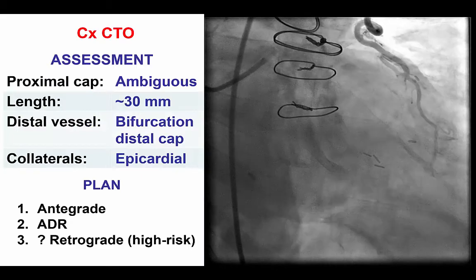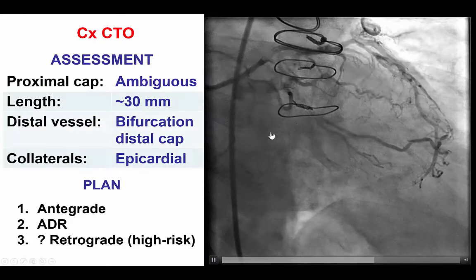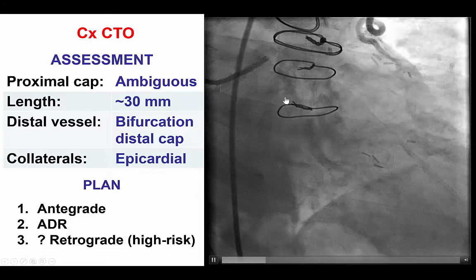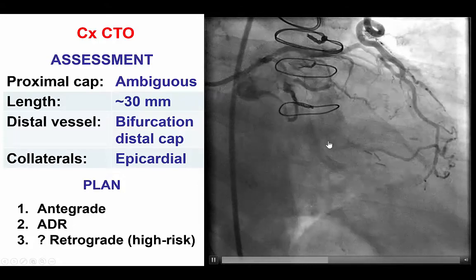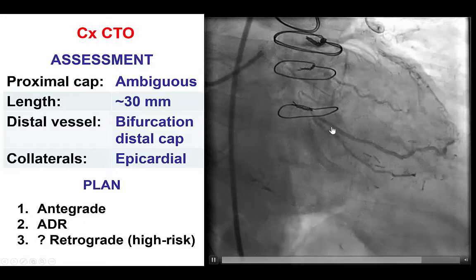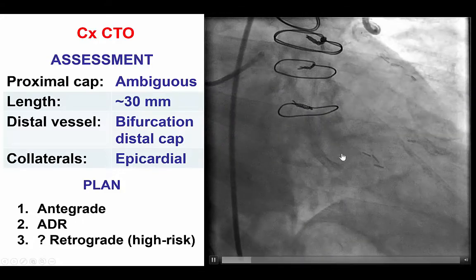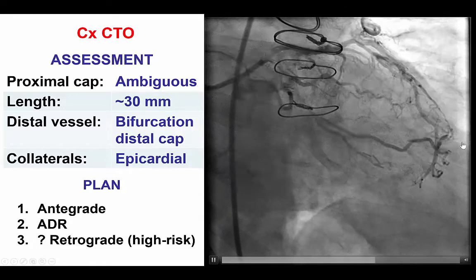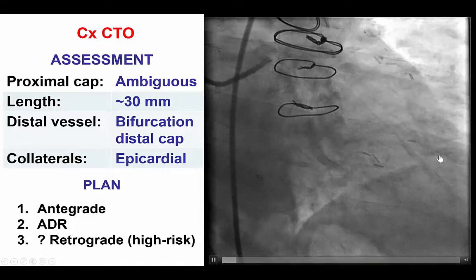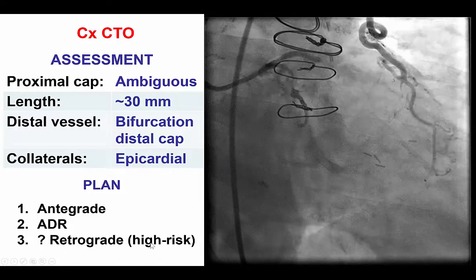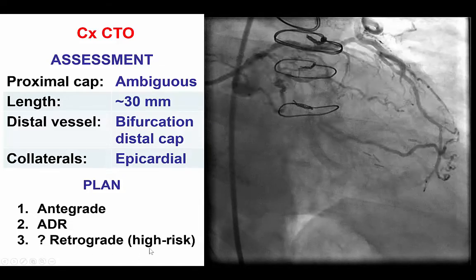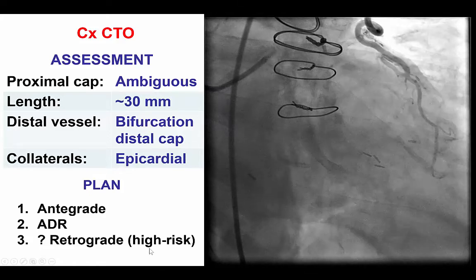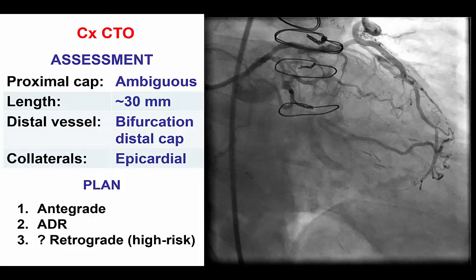This is the dual injection. Once again, we have an ambiguous proximal CAP. The occlusion is not too long, about 30 mm. There is a good quality distal vessel; however, there is a bifurcation close to the distal cap. The collaterals are epicardial from the LAD, which in turn fills the LIMA, and therefore may not be the best for going retrograde given that we would have to go through the LIMA, down the LAD, and through this very tortuous epicardial collateral. So this is mainly an antegrade case.